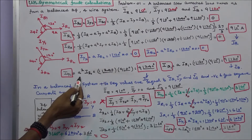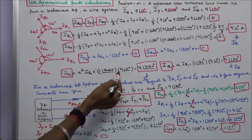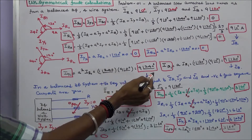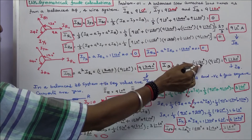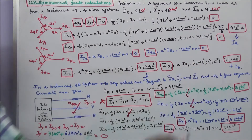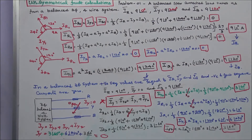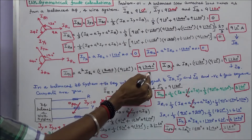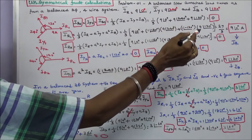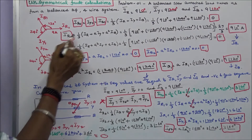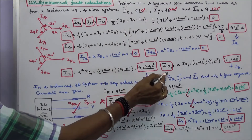IY1 is equal to 9 angle 240 degrees. Similarly, IB1 is equal to A into IR1, where A is equal to 1 angle 120 degrees and IR1 is equal to 9 angle 0 degrees, giving IB1 equal to 9 angle 120 degrees. So IR1 is equal to IR, IY1 is equal to IY, and IB1 is equal to IB.